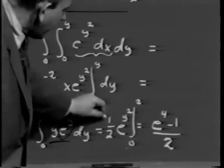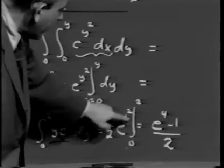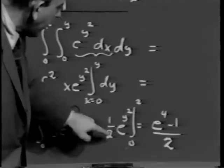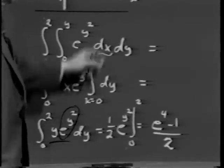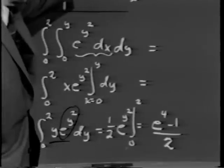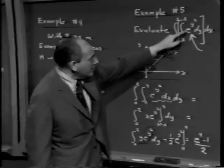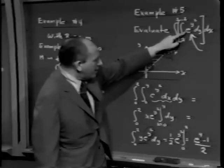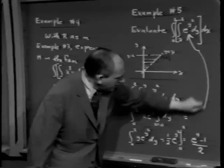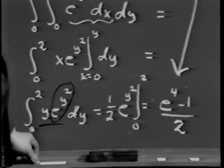This is beautiful, because the factor of y is exactly what I need. This is nothing more than ½ e^(y²) evaluated between 0 and 2. Replacing y by 2 gives ½ e⁴. Replacing y by 0 — remember e⁰ = 1 — gives minus ½. So the answer to evaluating this integral, which was impossible to do in the original form because there was no elementary function whose derivative is e^(y²), turns out to be (e⁴ − 1)/2.